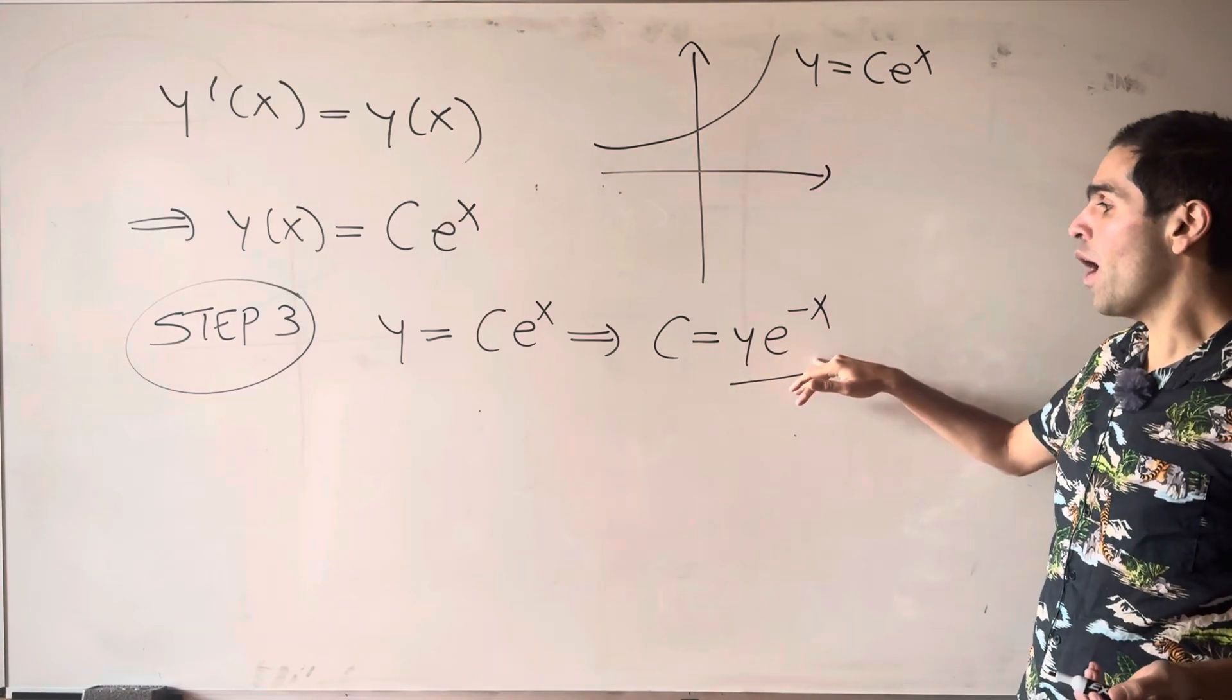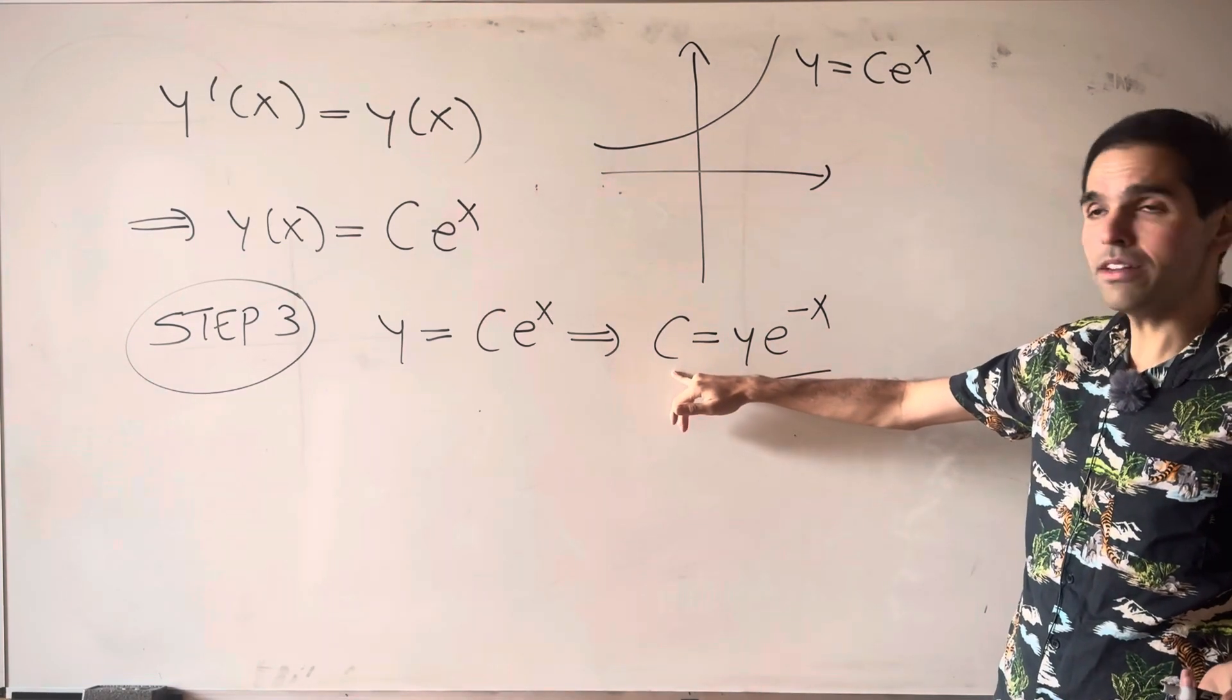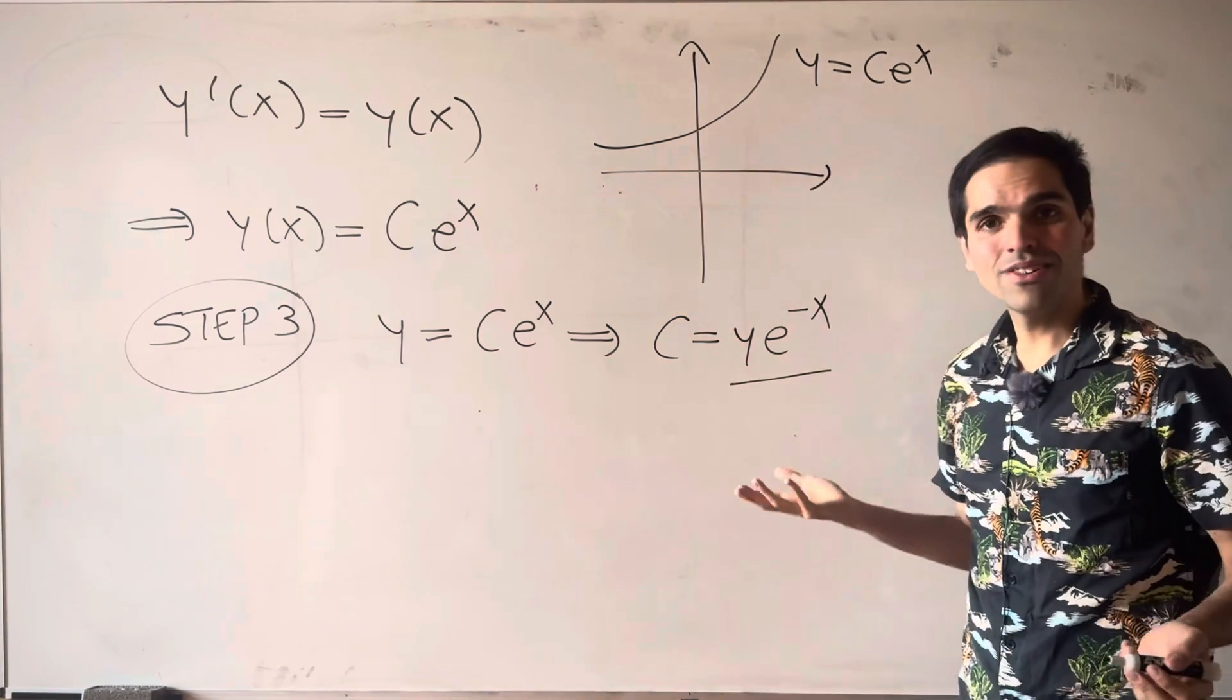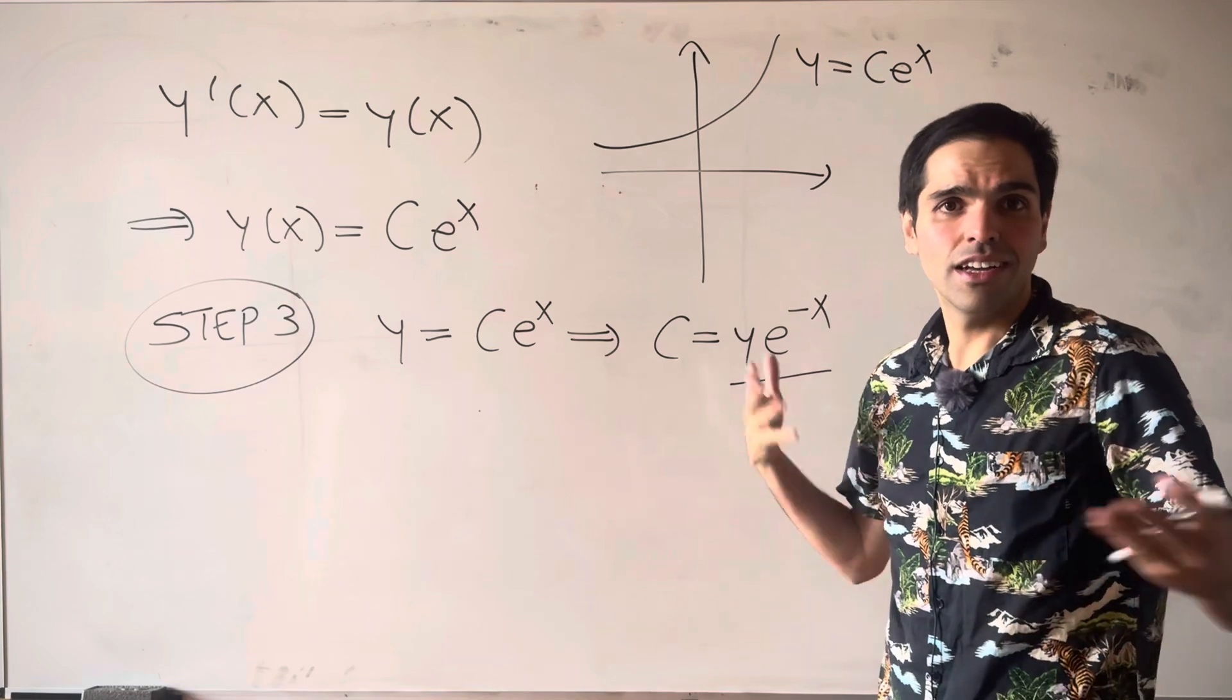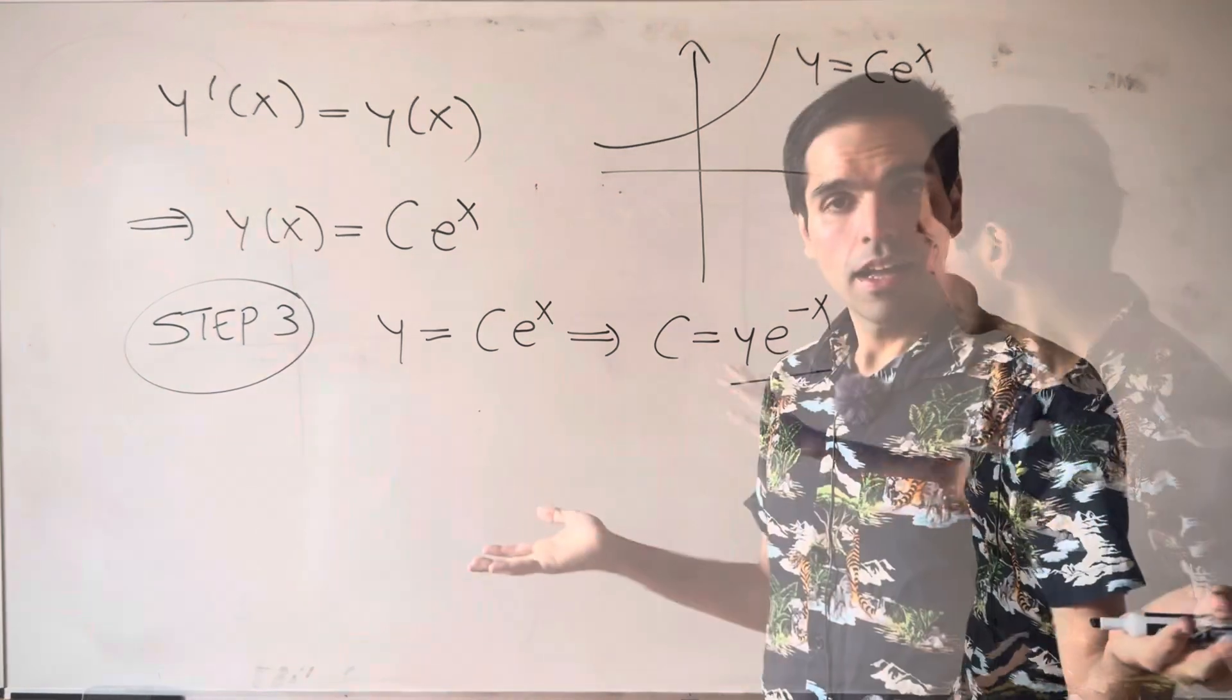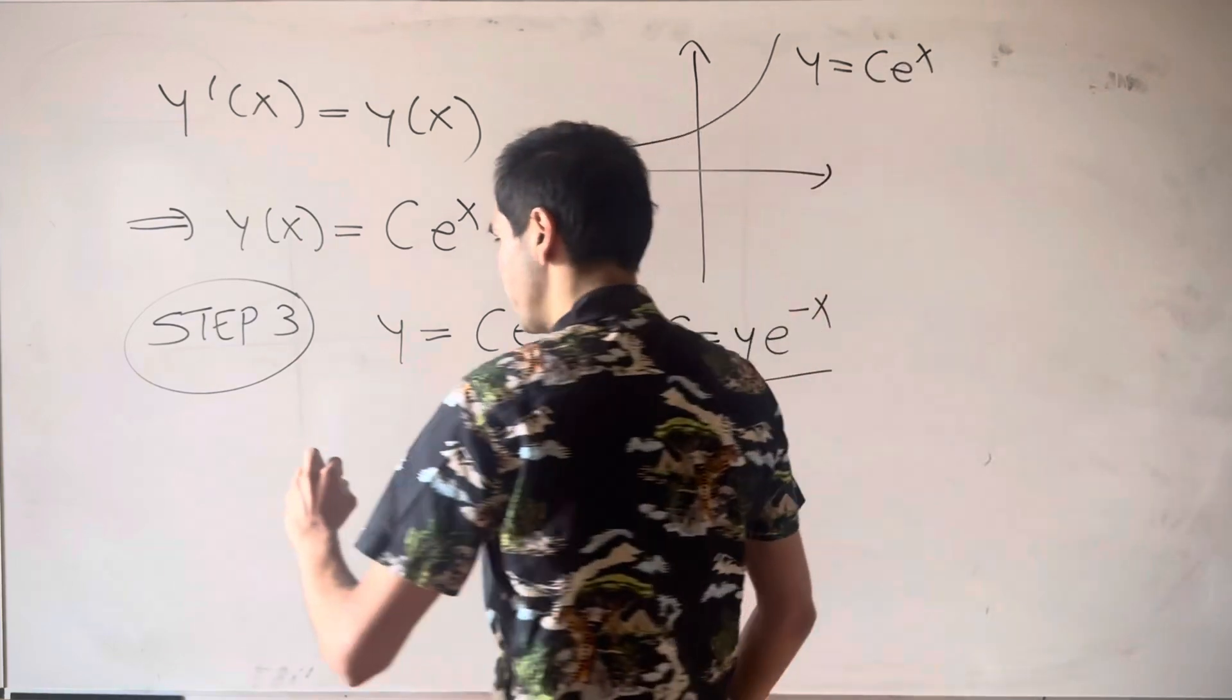For instance, if y e to the minus x is 1, that means we're on the curve e to the x. If y e to the minus x is minus 2, it says that we're on y equals minus 2 e to the x. And the same fact as before is still true.